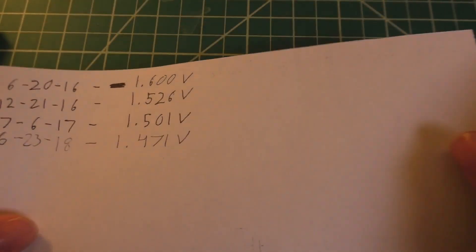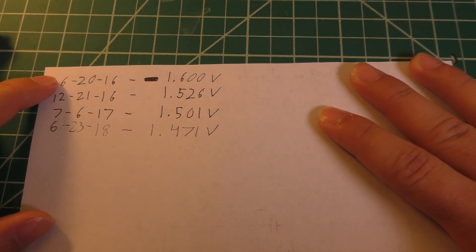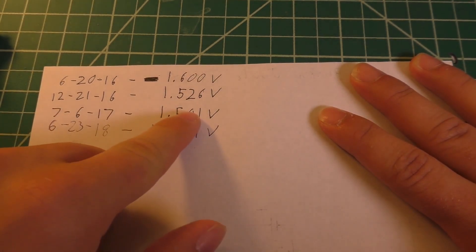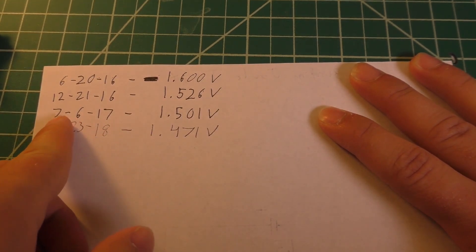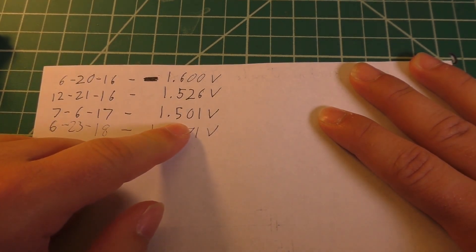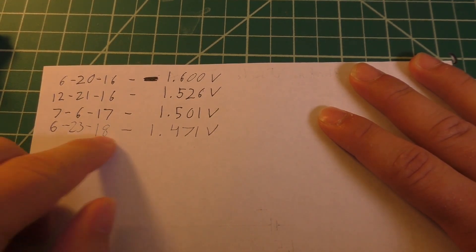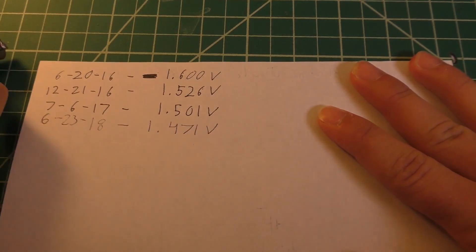Now on the back of this guy are the voltages at different dates. So June 20th 2016 it was at exactly 1.6 volts, six months later we were at 1.526 volts, and then one year from the day that I built it it was at 1.5, and two years from when I built it at 1.471 volts. And we're about to find out what it's at three years after I built it.